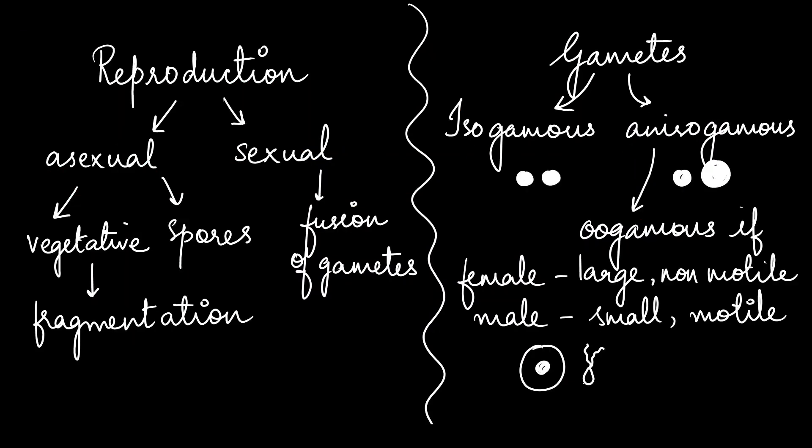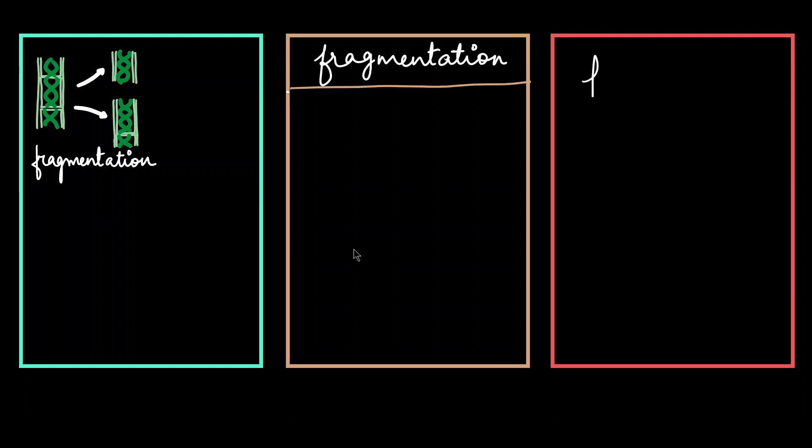We have already learned about the reproduction of algae so you can pause here in order to revise it. All three groups show different types of reproduction like vegetative, asexual and sexual modes. In green algae, we have already seen about fragmentation in spirogyra where the two fragments of spirogyra grow into two individual algae. Similar fragmentation is seen in brown algae as well as in red algae.